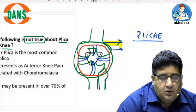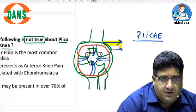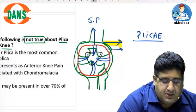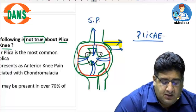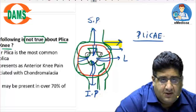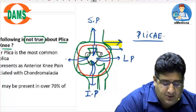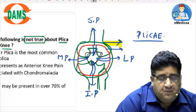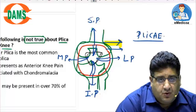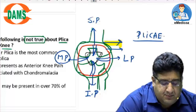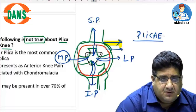There are different types of plica based on location: since it is superior to the patella, it is called suprapatellar plica; infrapatellar plica; fibula is on the lateral side, so lateral plica; and tibia is on the medial side, so medial plica.